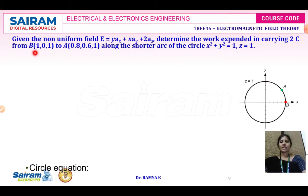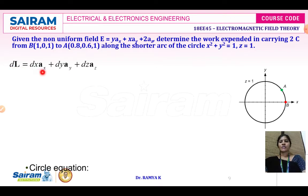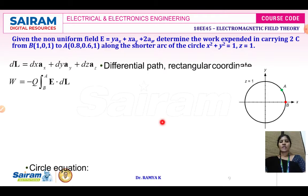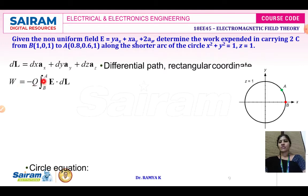We have two points: B at (1, 0, 1) and point A at (0.8, 0.6, 1). The differential elemental length DL = DX·Ax + DY·Ay + DZ·Az in the Cartesian coordinate system, also called the rectangular coordinate system. The differential amount of work done — determine the work expended in carrying 2 coulombs of charge. Therefore the work done formula is W = -Q ∫[B to A] E·dL.